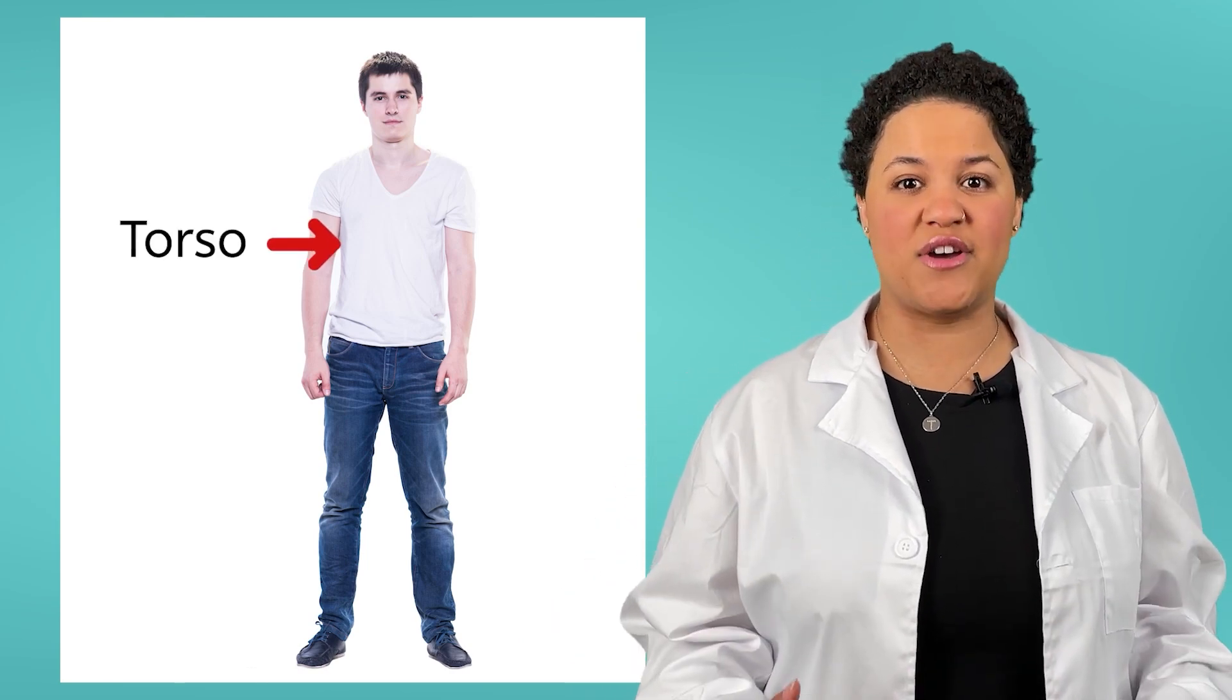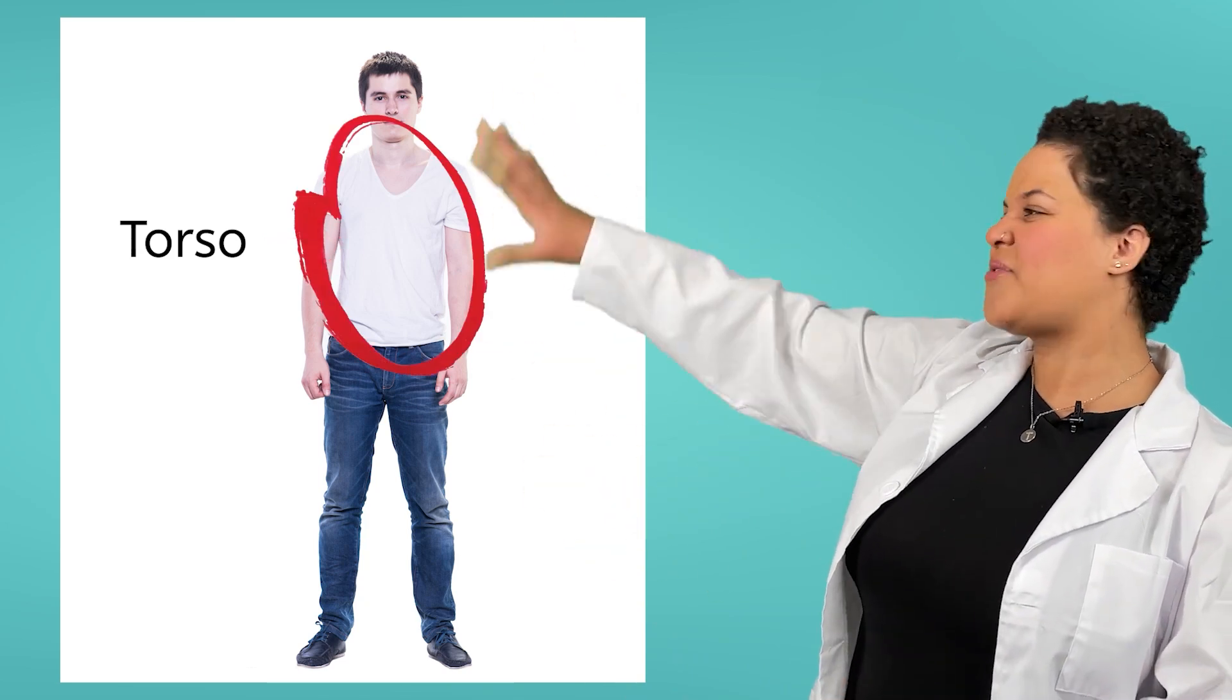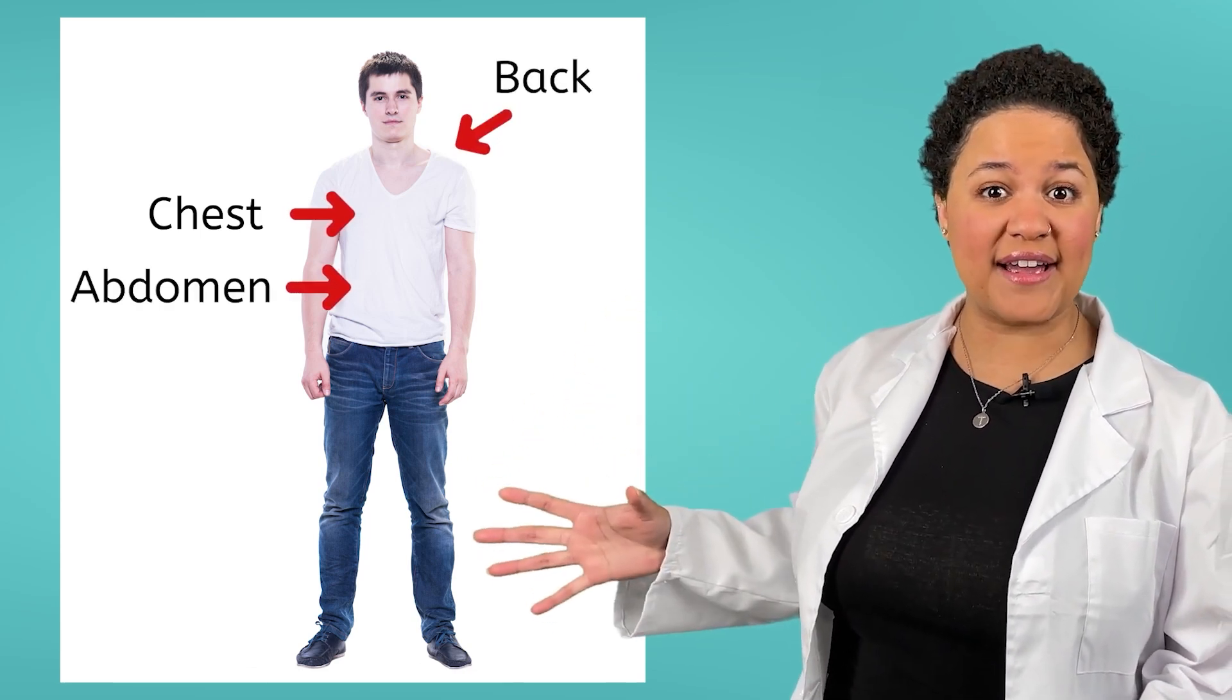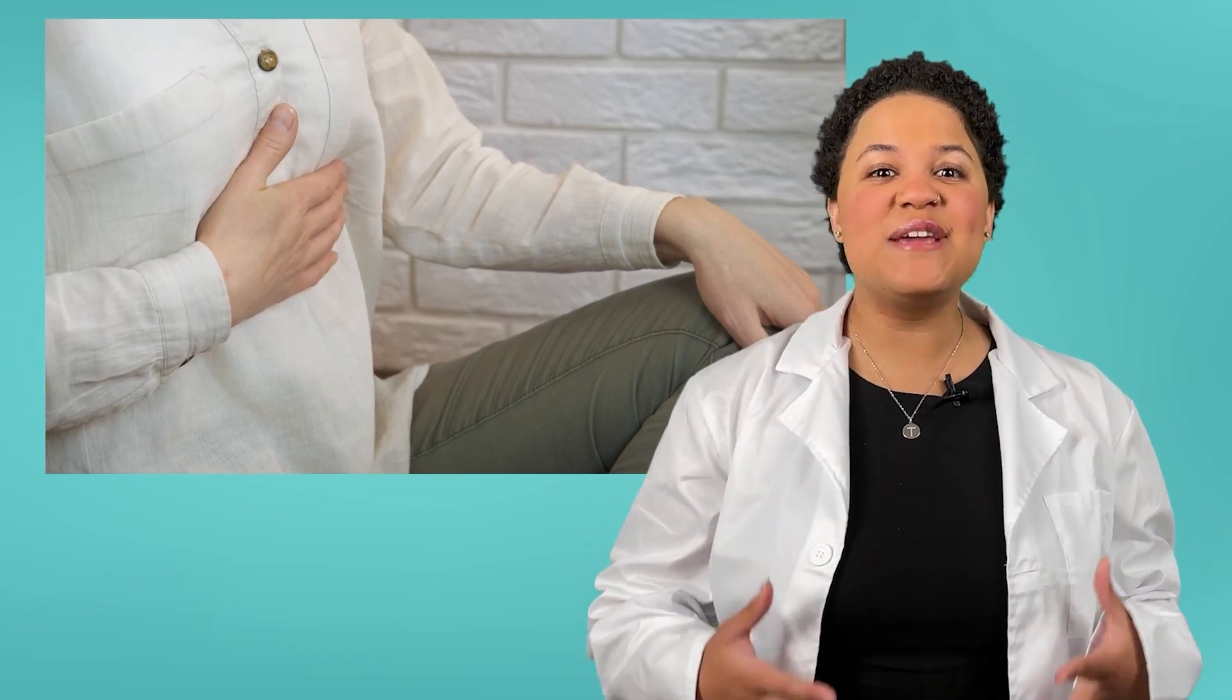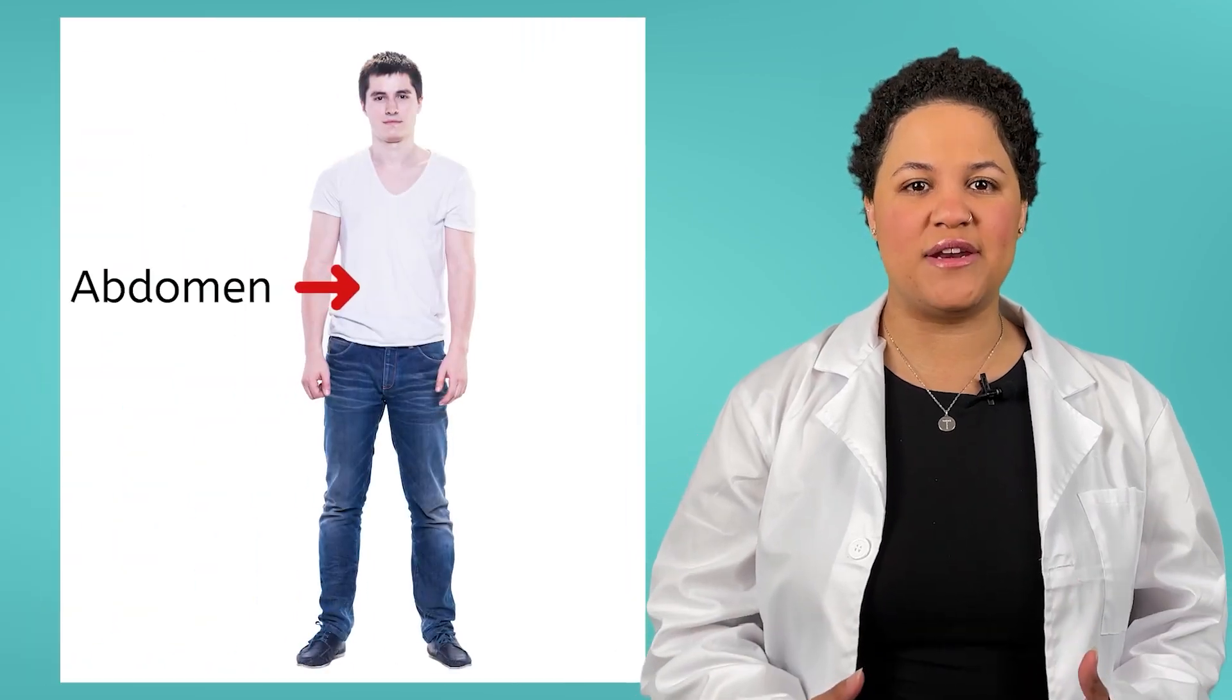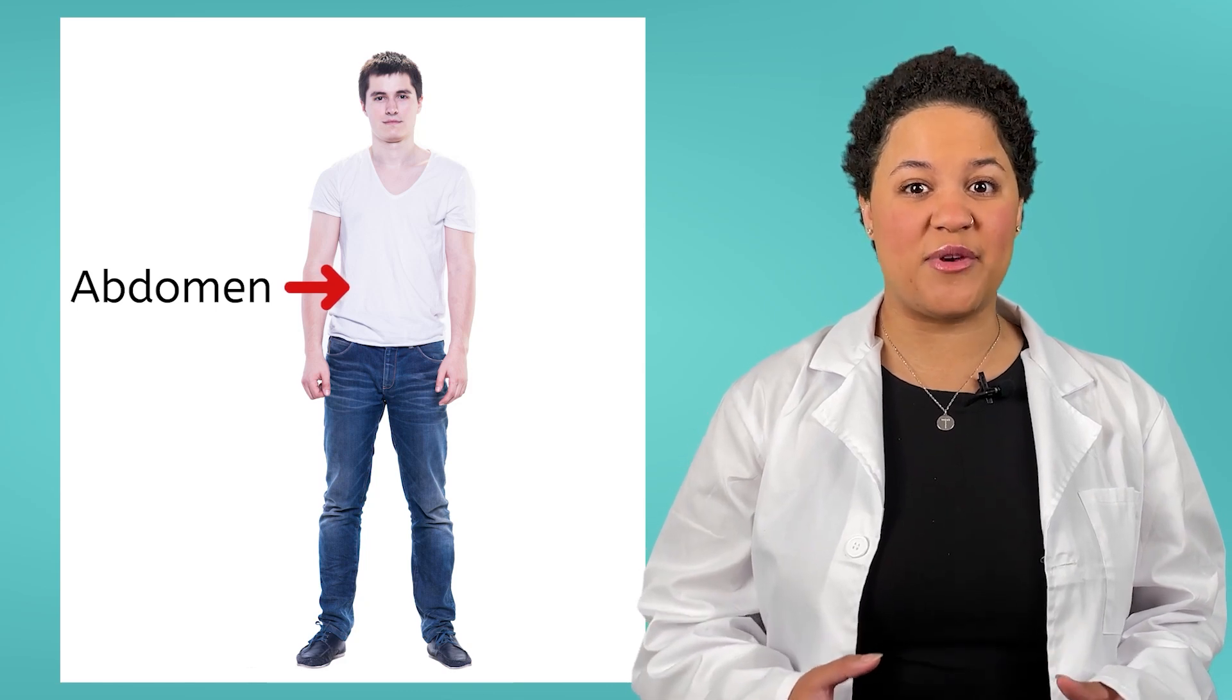The torso is this whole section right here, made up of the chest, abdomen, and even the back. The chest moves in and out as you breathe through your nose or your mouth. Take a deep breath and I bet you'll notice it moving. Below the chest is the abdomen, where your belly button is located. Sometimes you might hear sounds coming from your abdomen if you're feeling hungry. The chest and the abdomen protect a lot of body parts that are on the inside of the body.